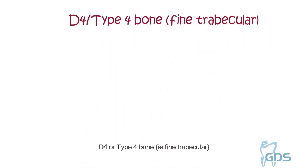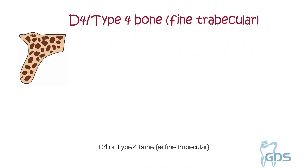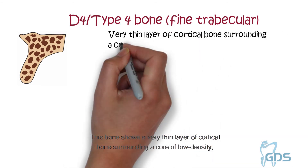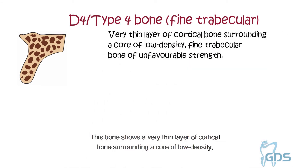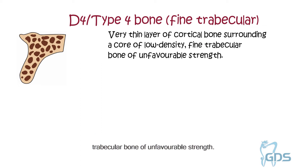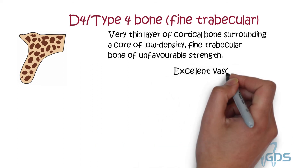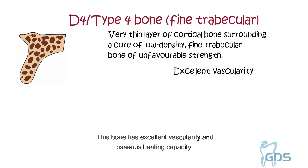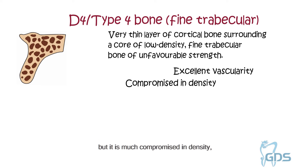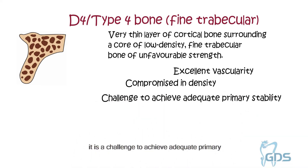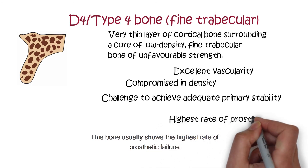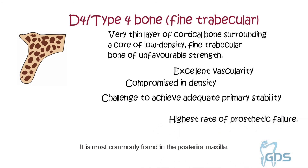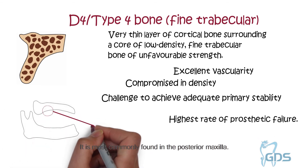The fourth type is D4, or type 4 bone, i.e. fine trabecular. This bone shows a very thin layer of cortical bone surrounding a core of low density fine trabecular bone of unfavorable strength. This bone has excellent vascularity and osseous healing capacity but is much compromised in density. It is a challenge to achieve adequate primary stability and favorable osseointegration. This bone usually shows the highest rate of prosthetic failure and is commonly found in the posterior maxilla.